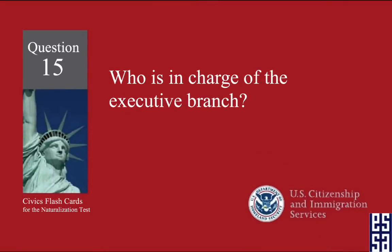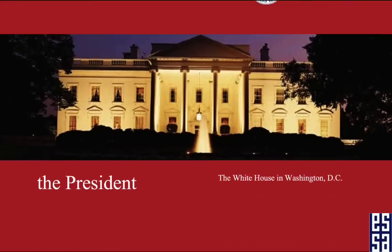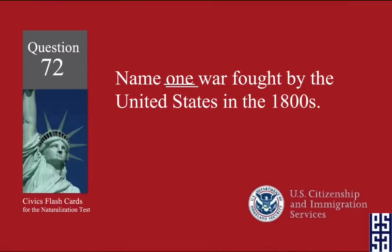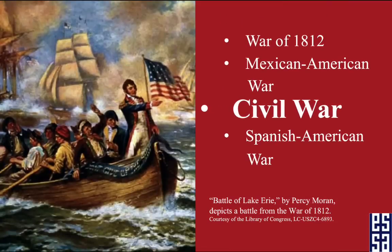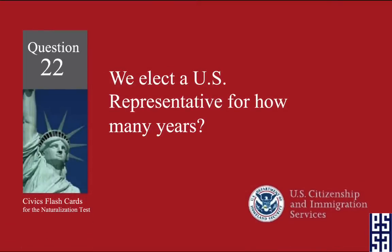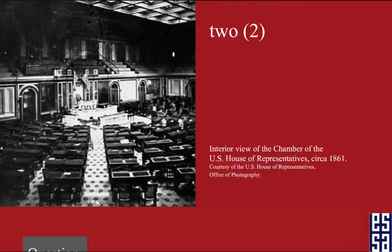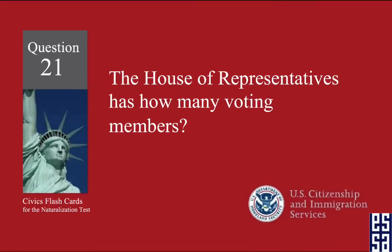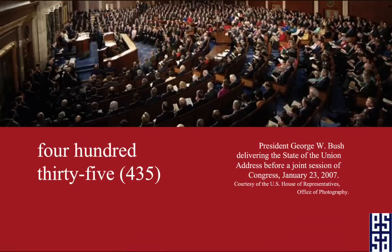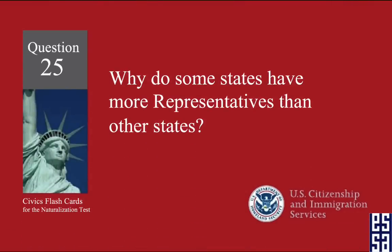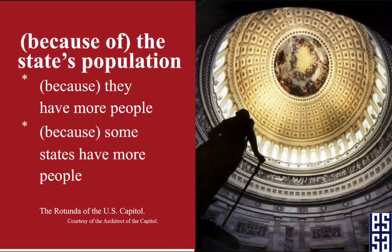Who is in charge of the executive branch? The President. Name one war fought by the United States in the 1800s. The Civil War. We elect a U.S. representative for how many years? Two years. The House of Representatives has how many voting members? 435. Why do some states have more representatives than other states? Because of the state's population.